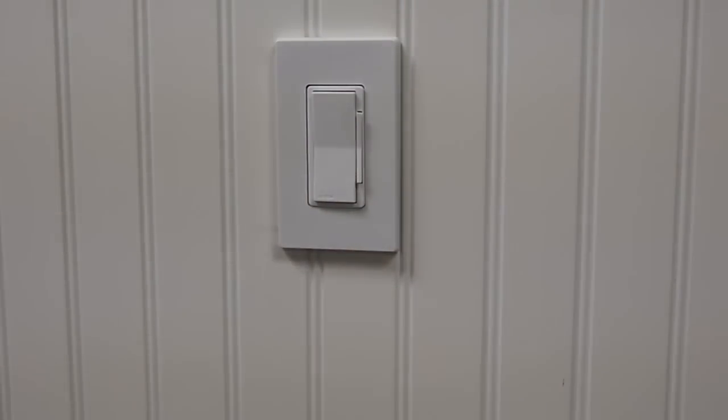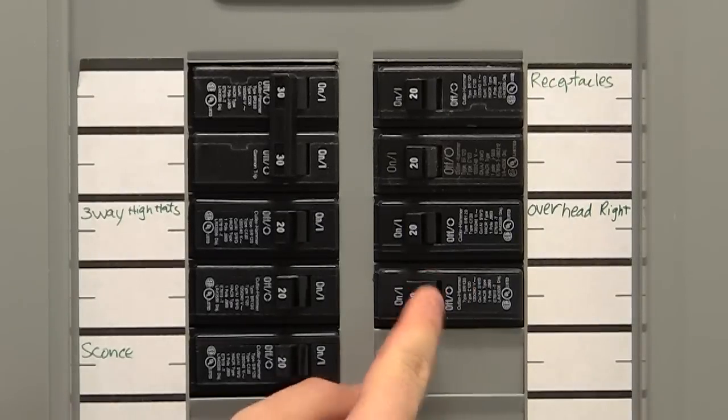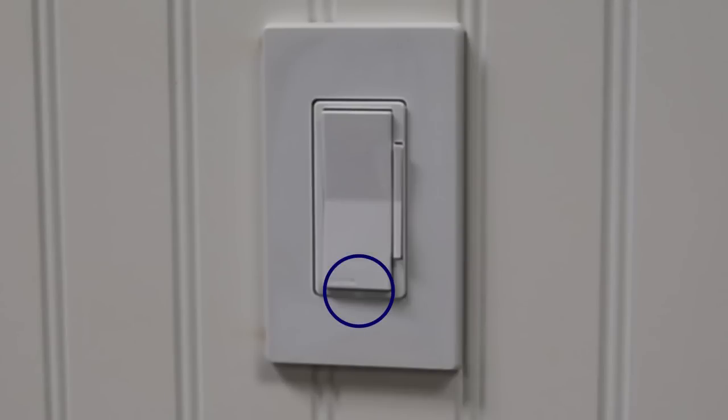We are now going to test the device. Restore power at the circuit breaker or fuse. The status light on the dimmer will illuminate green. Press the top of the dimmer to turn the controlled light on. Press the dim bright bar up and down to raise and lower the light level.